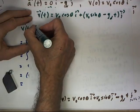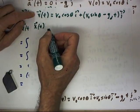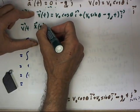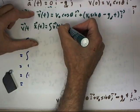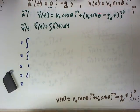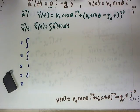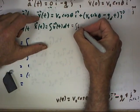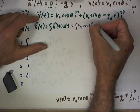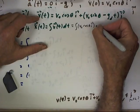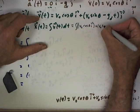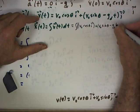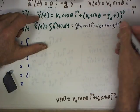So x of t, well v is the derivative of our position function, so our position function is an integral of our velocity function. So we're going to have to integrate this function. When we do, we'll get another integration constant. And what we get is the integral of v0 cosine theta i plus v0 sine theta minus g sub d t j with respect to t.